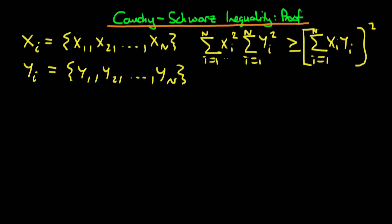Written down like this, it's not immediately clear what uses the Cauchy-Schwarz inequality actually has. But it has a number of uses, particularly in statistics. To realise this, imagine that x has a sample mean of 0, and imagine that y also has a sample mean of 0. You can imagine transforming to a situation whereby the new variable did actually have a sample mean of 0. When we assume that the sample mean of x and the sample mean of y are both 0, we can recover something quite useful from the Cauchy-Schwarz inequality.